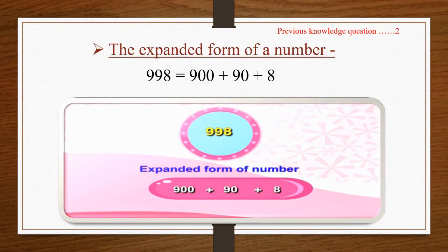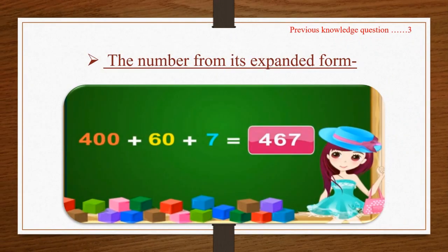The next picture shows the expanded form of a number. Here, the number given is 998. The expanded form of a number is 900 plus 90 plus 8. Now you can see the next picture on your screen: write the number from its expanded form. So, 400 plus 60 plus 7 is equal to 467.